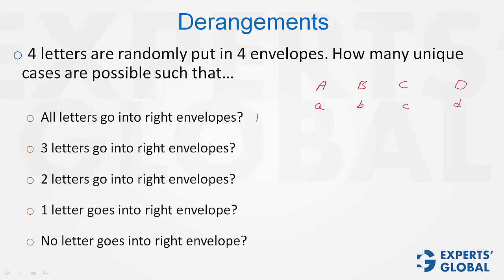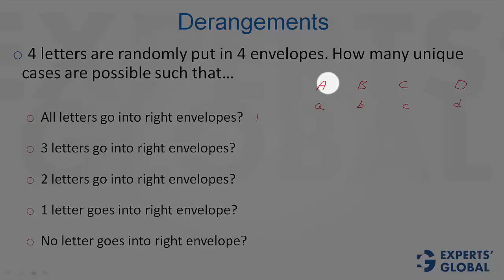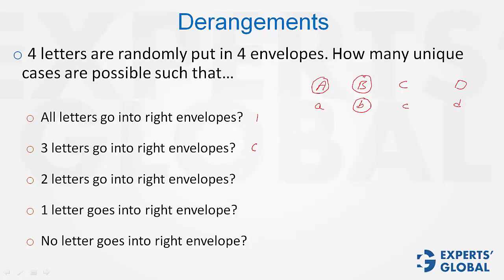Second question, three letters go into right envelopes. Imagine, is that practically possible? If one letter goes into wrong envelope, let's say it goes into the envelope of B, then the letter B is also bound to go into some wrong envelope, A, C, or D, and therefore, this case is not possible. The answer is 0 here.